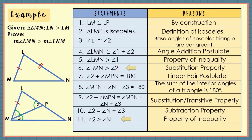And lastly, based on statements 6 and 11, if the measure of angle LMN is greater than the measure of angle 2, and the measure of angle 2 is greater than the measure of angle N, then the measure of angle LMN is greater than the measure of angle N — because of the transitive property. We have just proven Triangle Inequality Theorem 1.